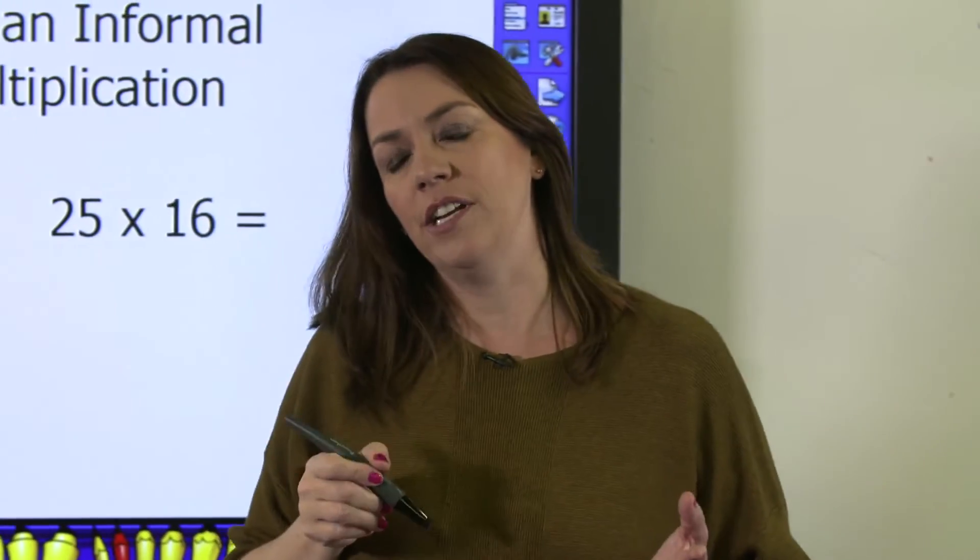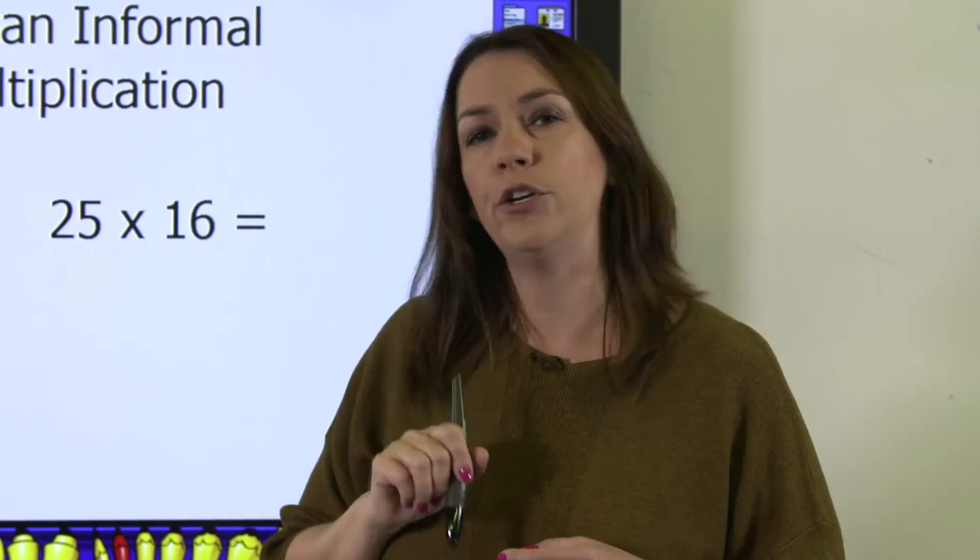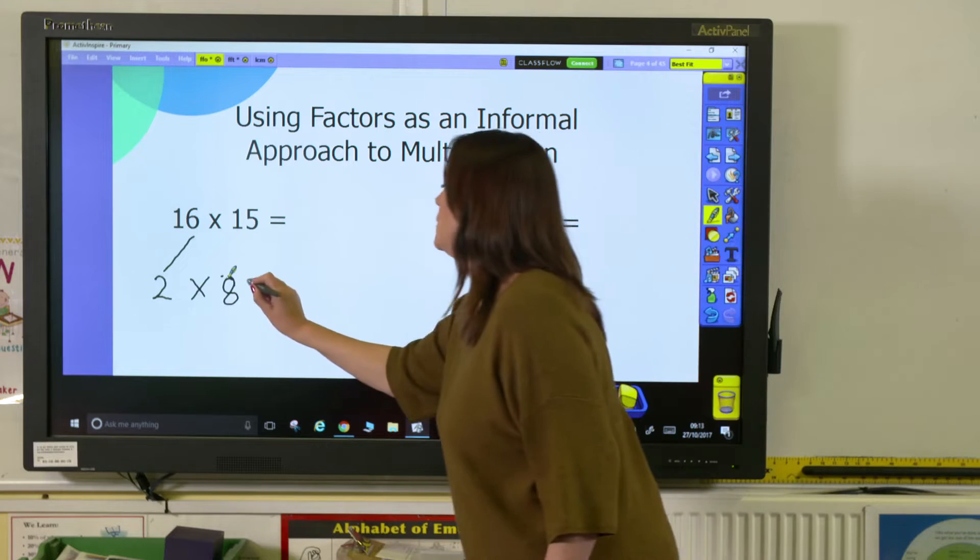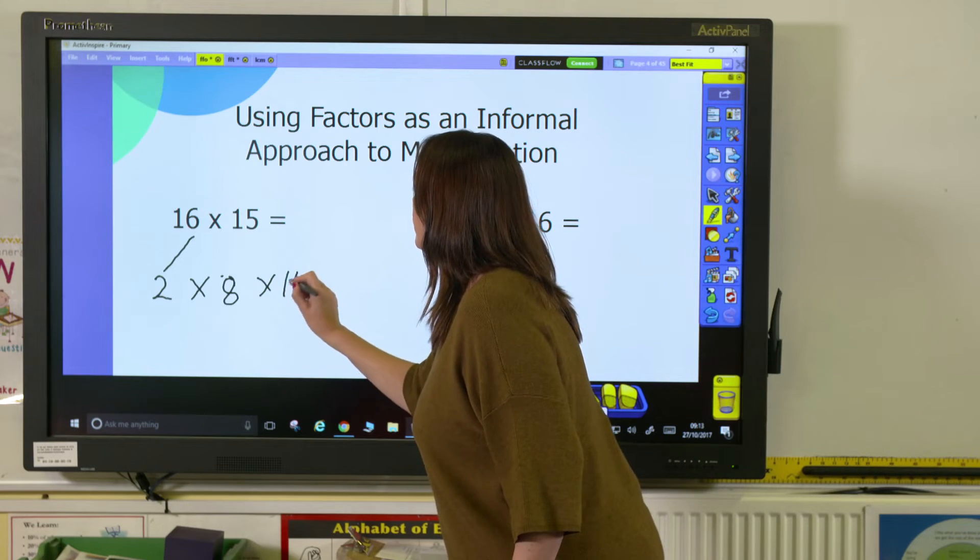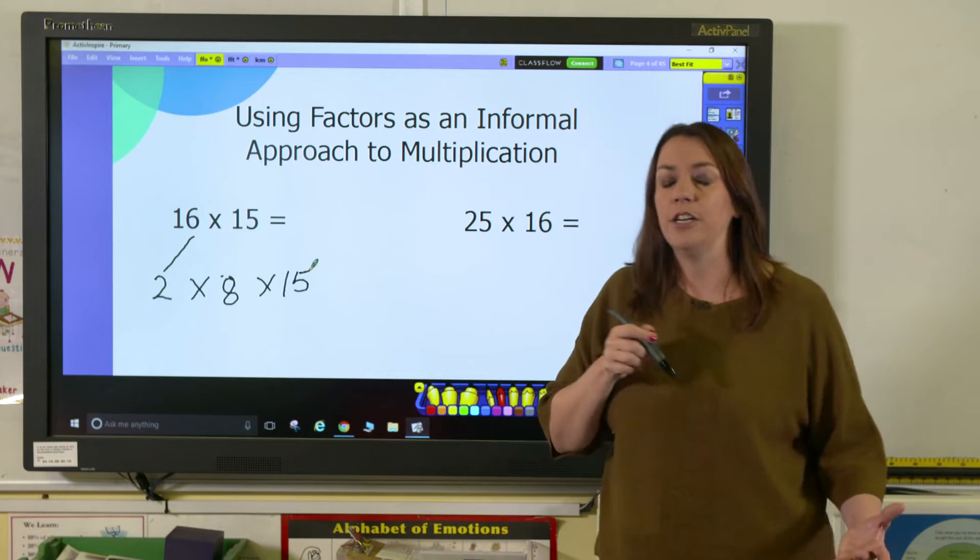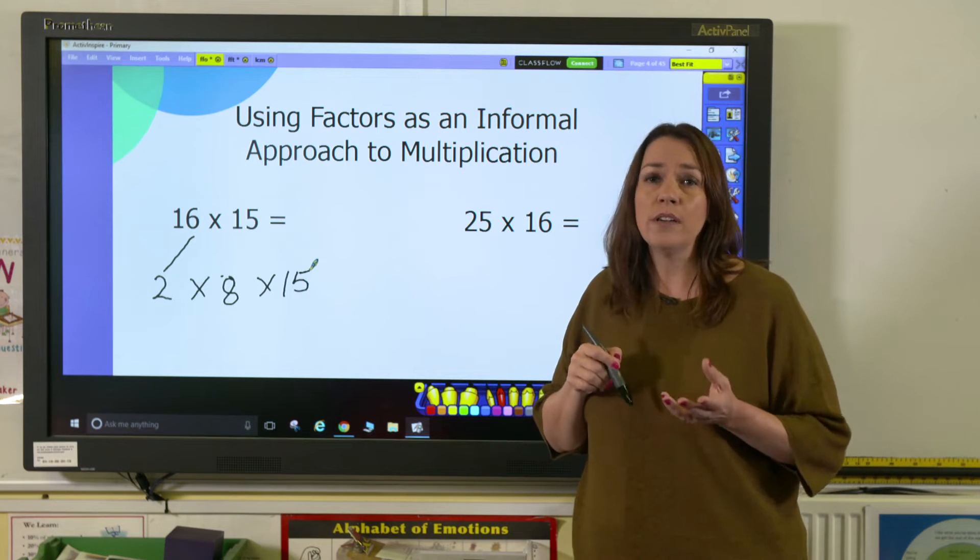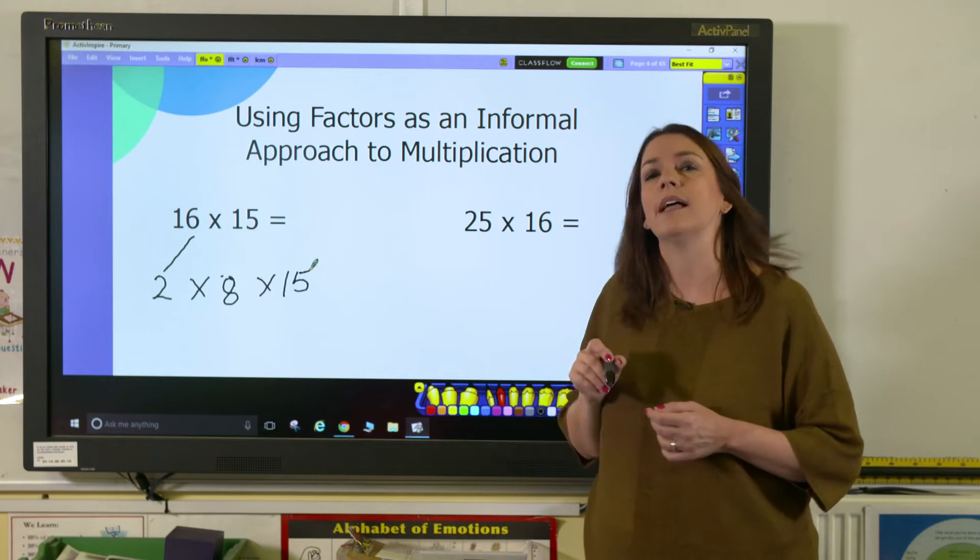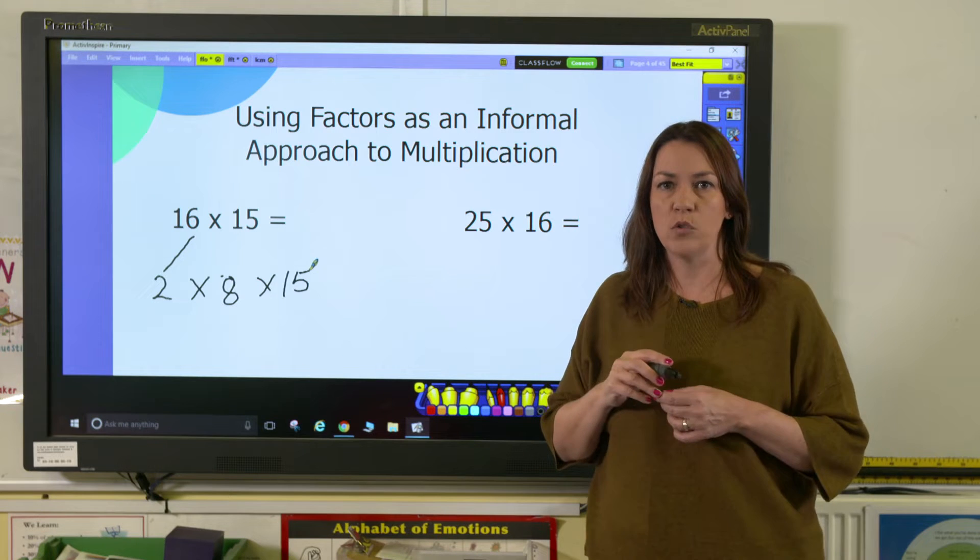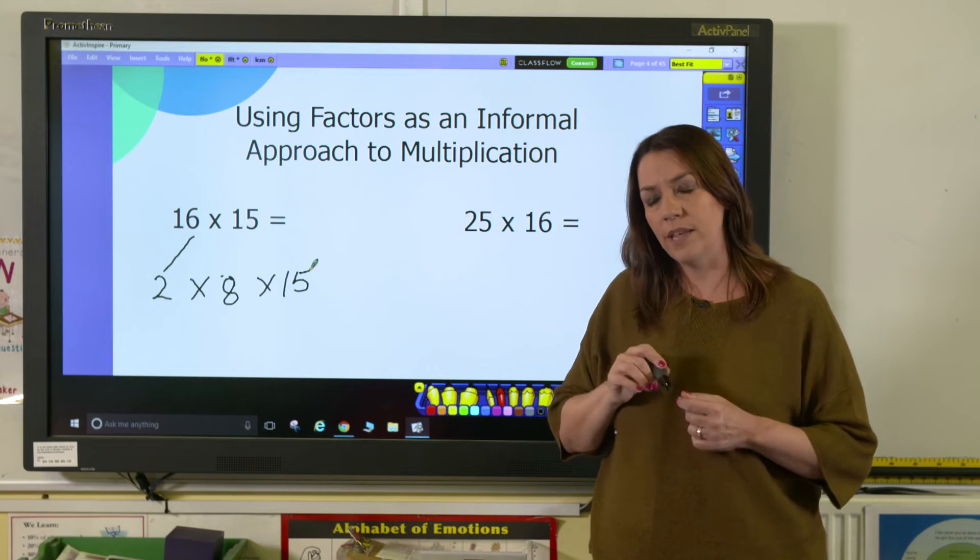So we've turned our calculation into something quite different now. We now have 2 times 8 times 15. Now that's not actually looking any easier at the moment. So you'd like to think that pupils at this stage would understand that the order of the numbers in this multiplication don't matter, they still get the same answer.